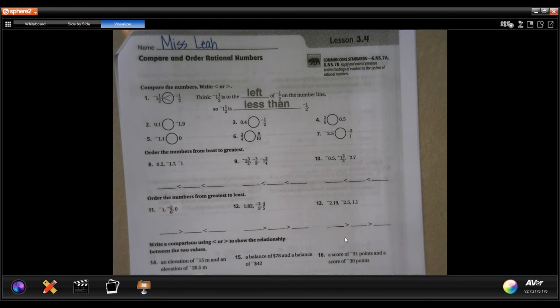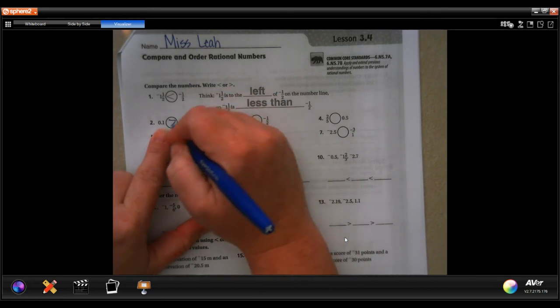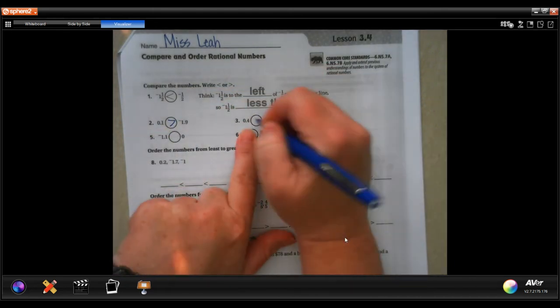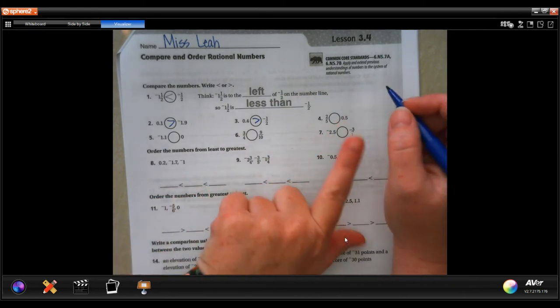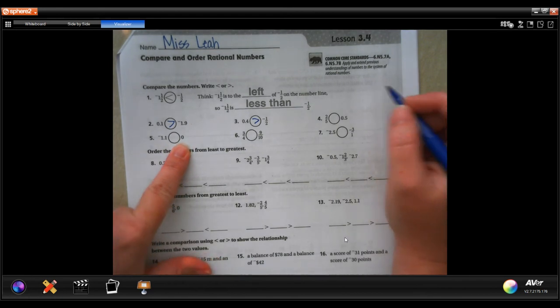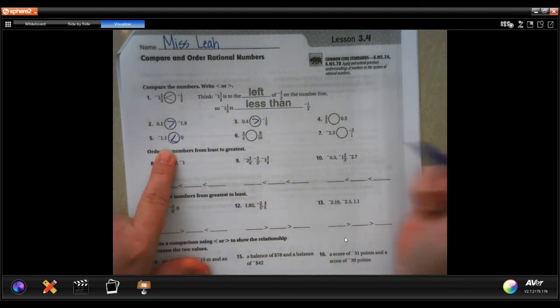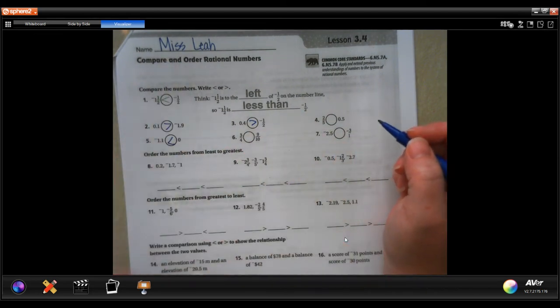We're going to go ahead and get started with number 2. Anytime that you have a positive number and a negative number, your positive number is going to be bigger. It doesn't matter what it is. Positive, negative, positive number is bigger. Those are both positive, we're going to wait for a minute on that one. A zero, consider it a positive number. It's always going to be bigger than a negative number. Both positive, negative, negative, we'll deal with that in just a minute.